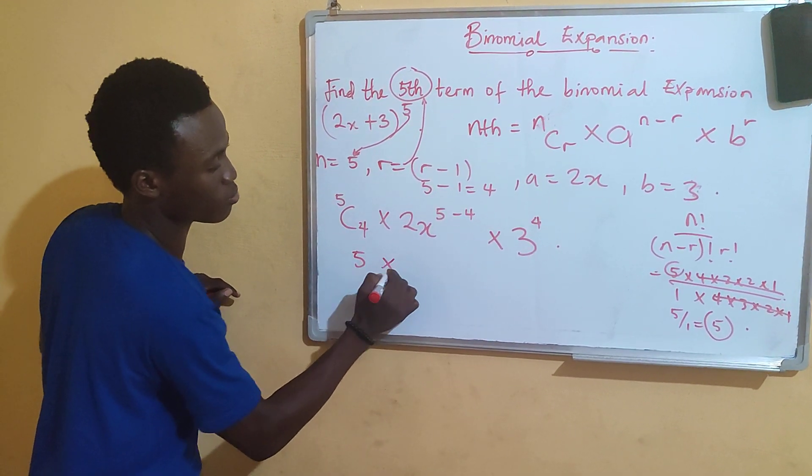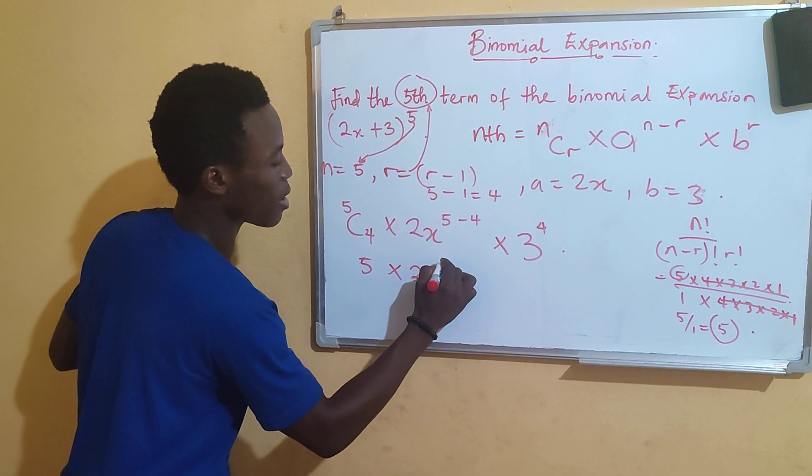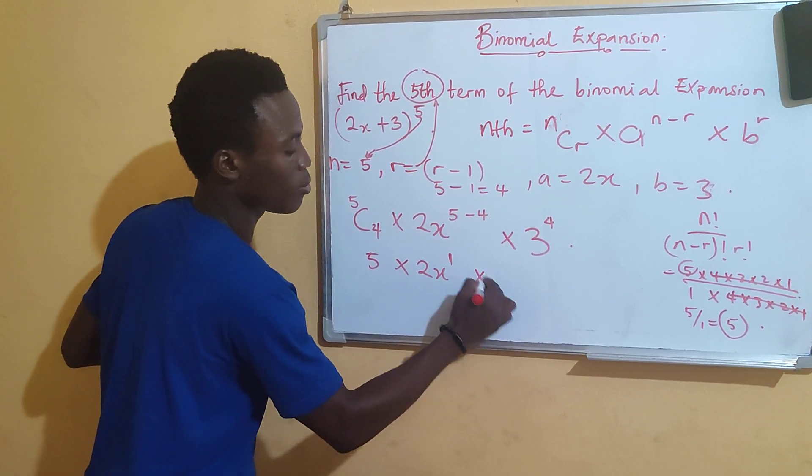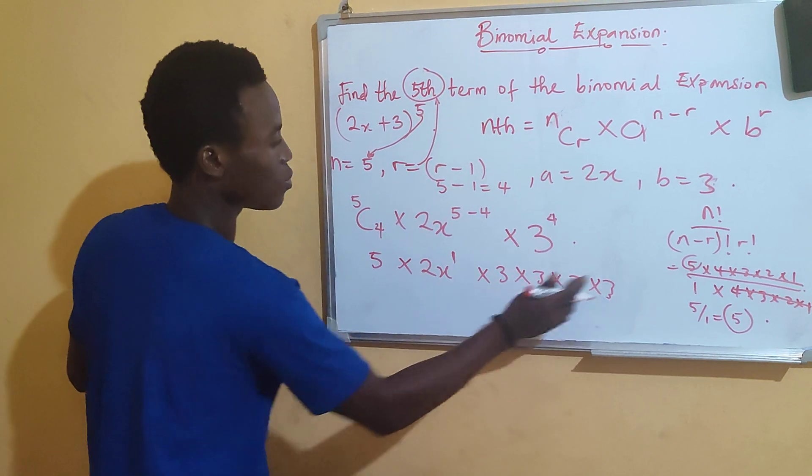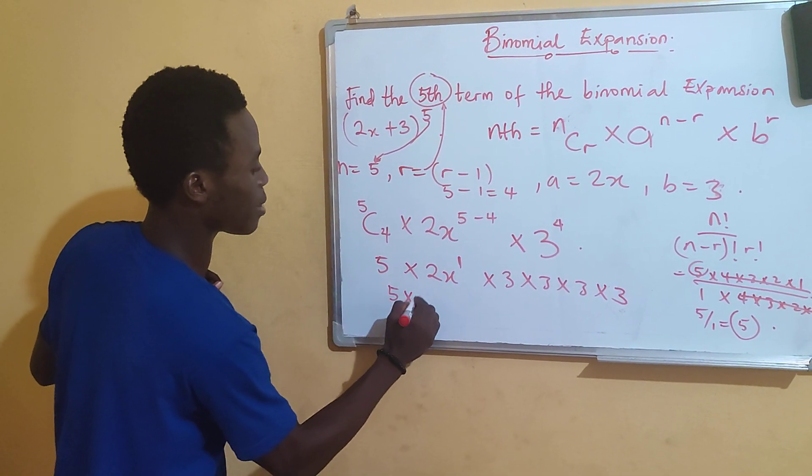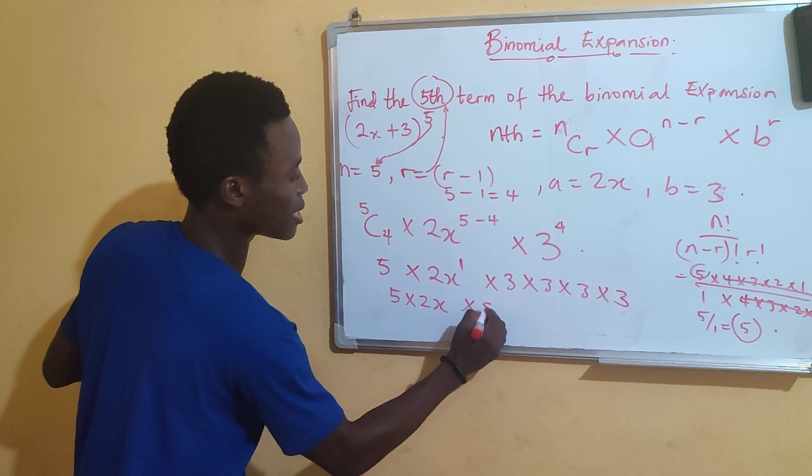So, 5 combination 4 gives me 5 multiplied by 2x raised by 1 multiplied by 3 times 3 times 3 times 3. From there now, I will have 5 multiplied by 2x multiplied by 81.